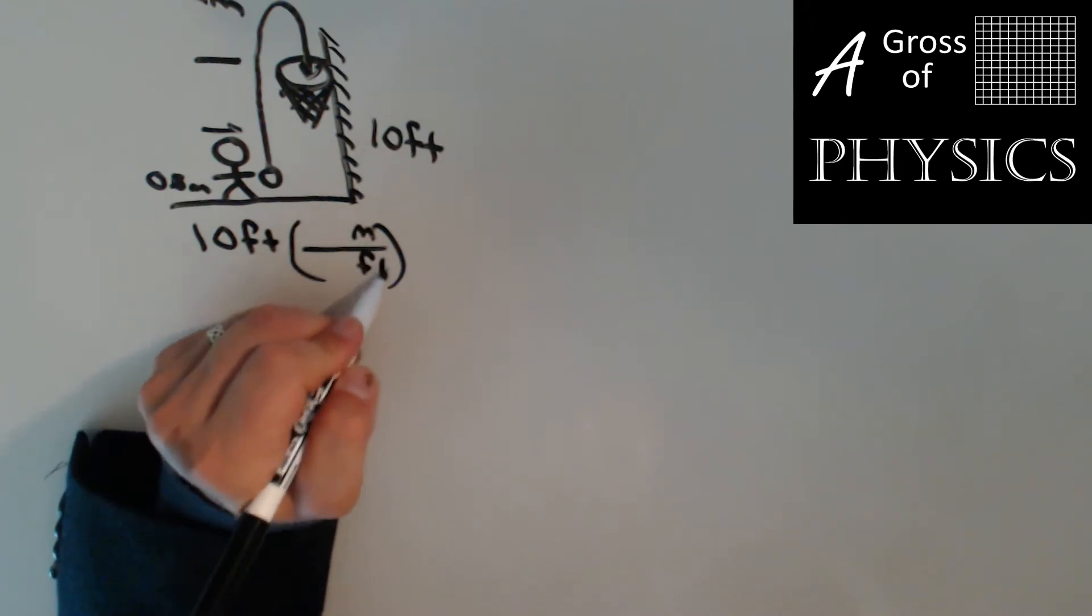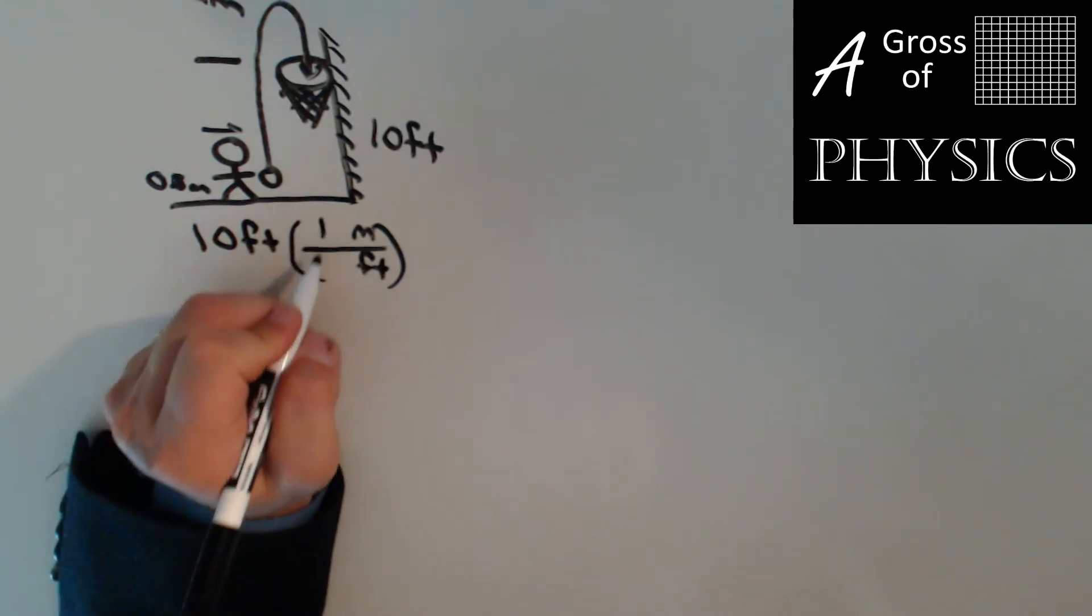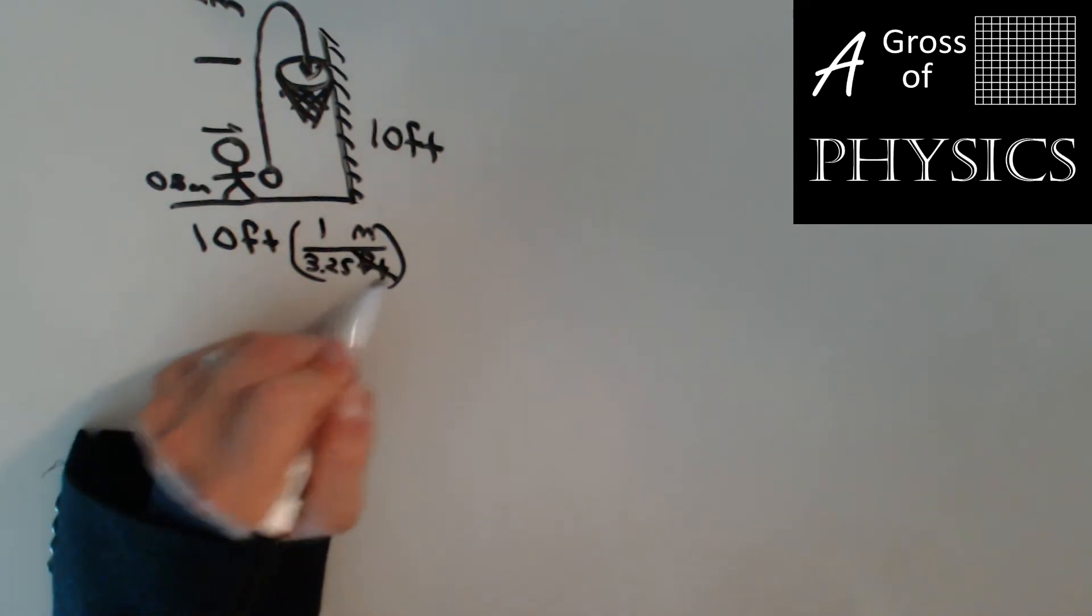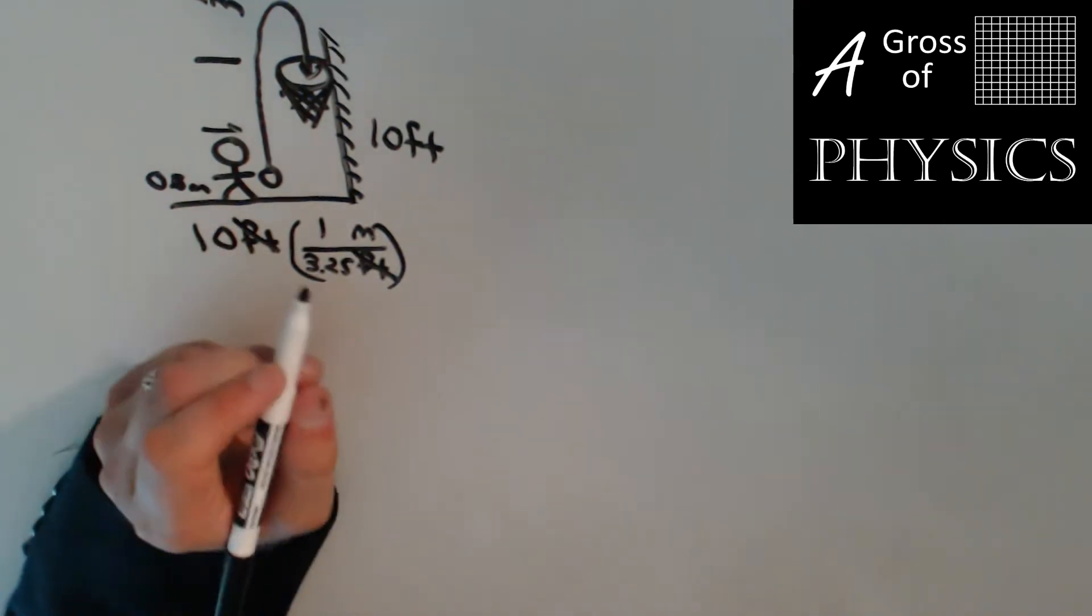We're going to put feet on the bottom, meters on the top. One meter is 3.25 feet. If you forgot that, you can look it up.